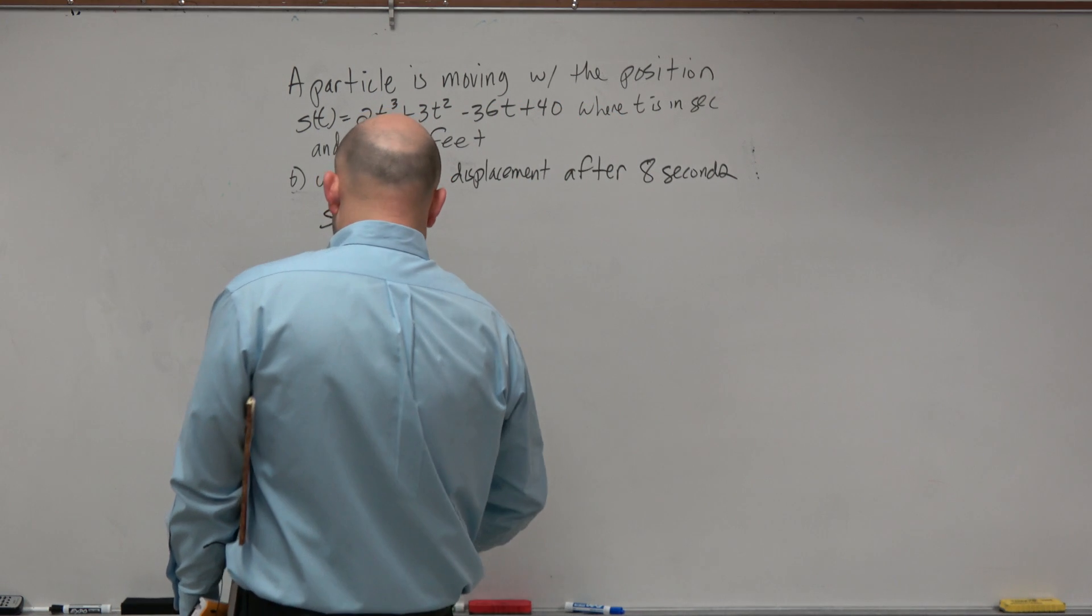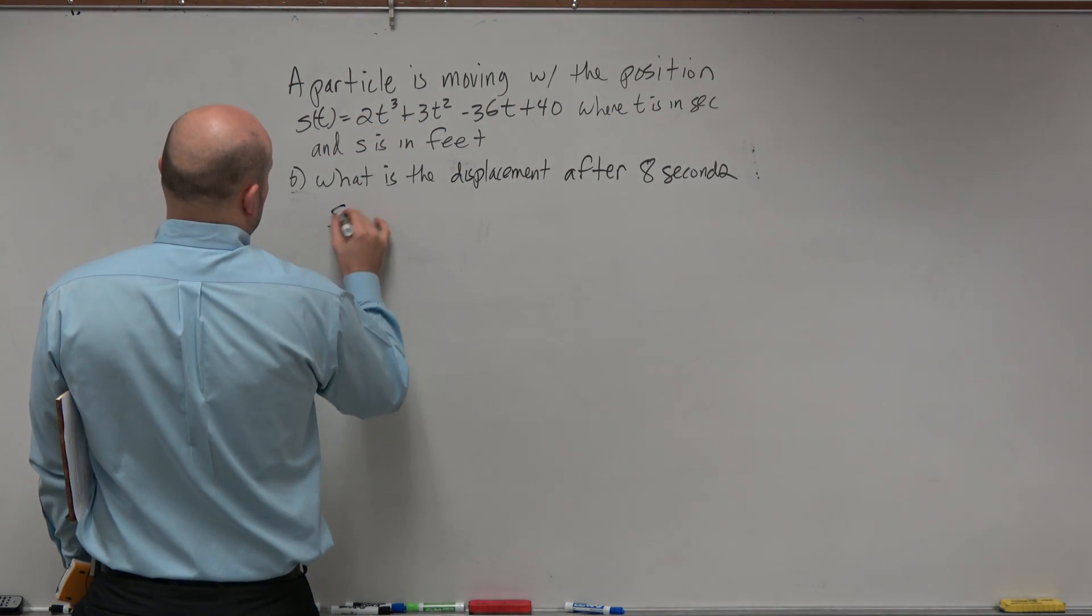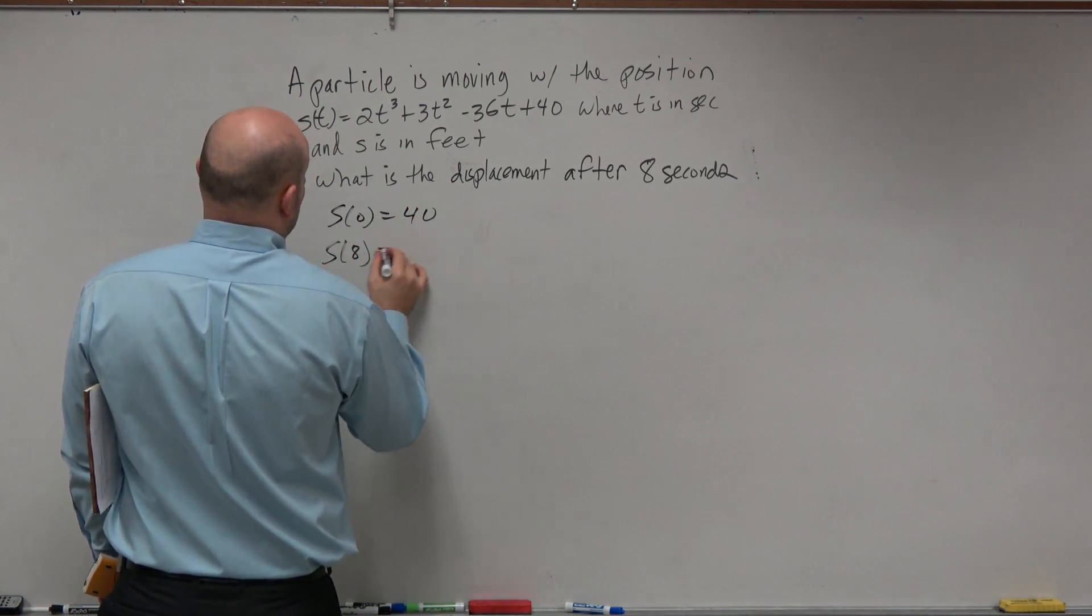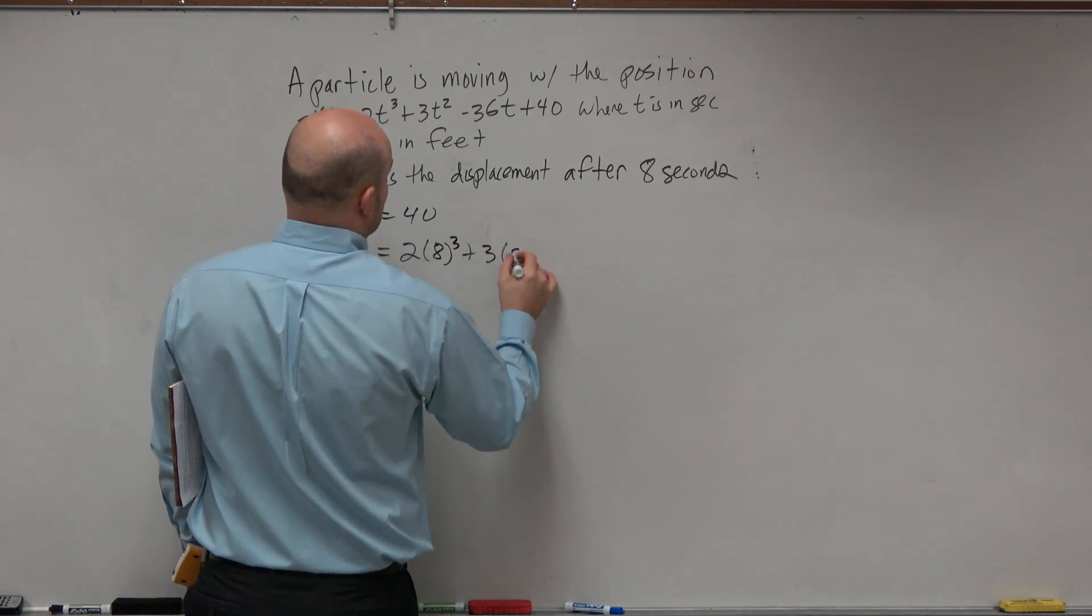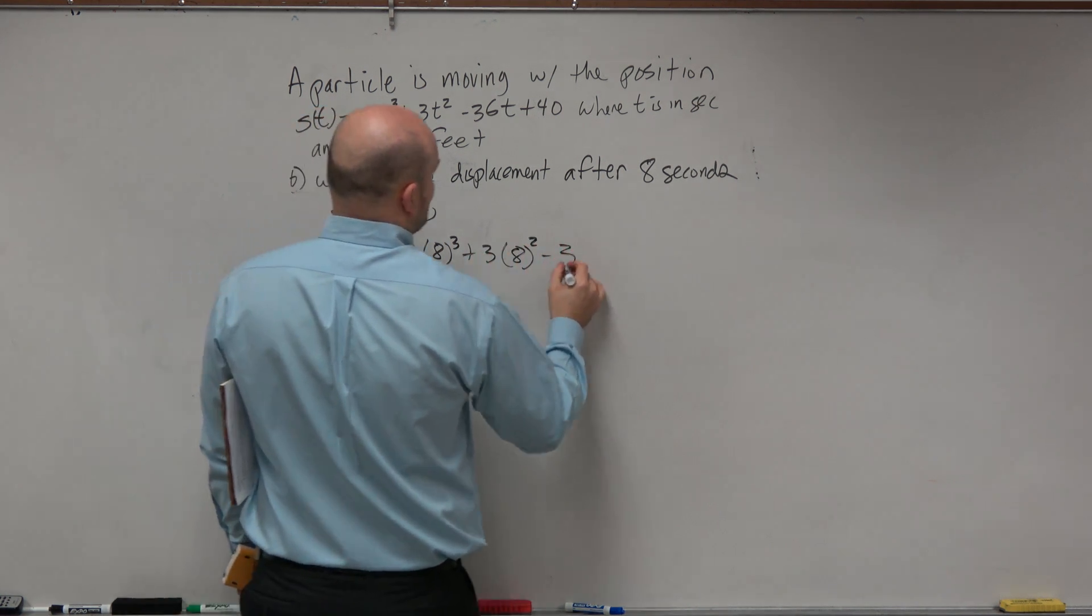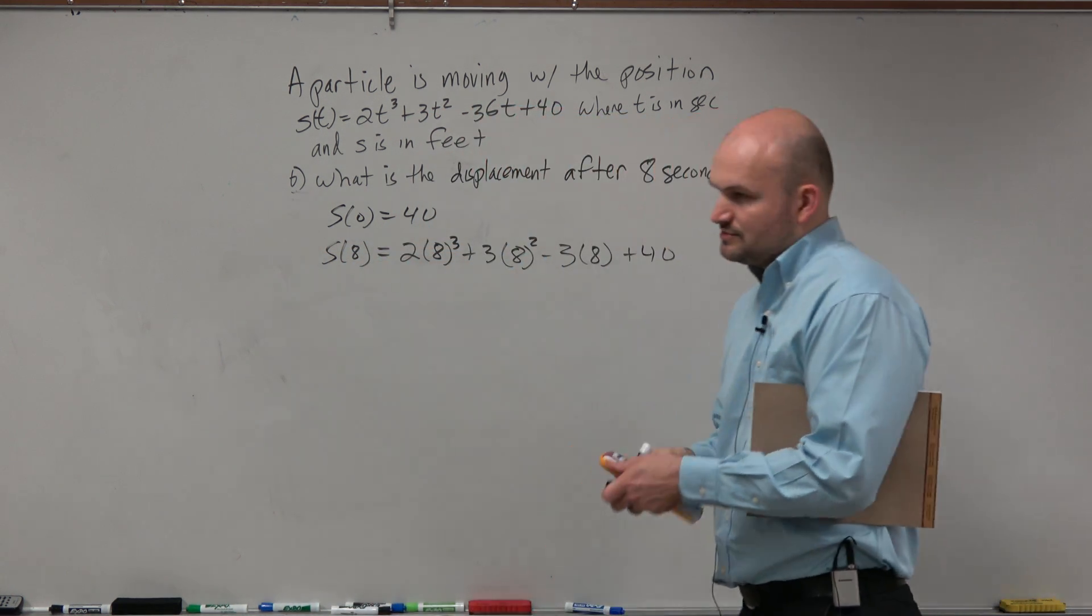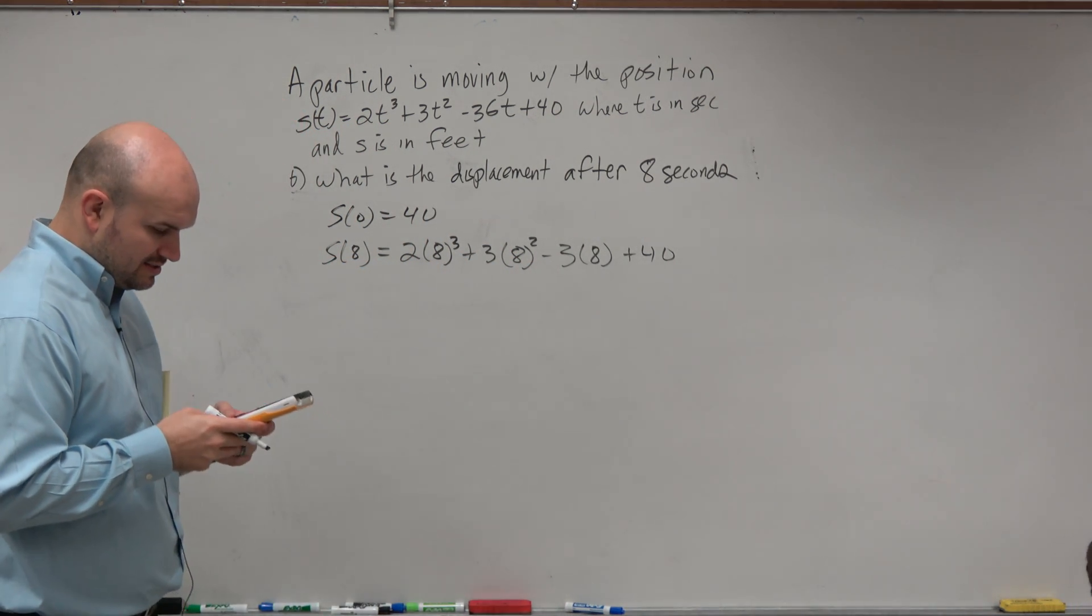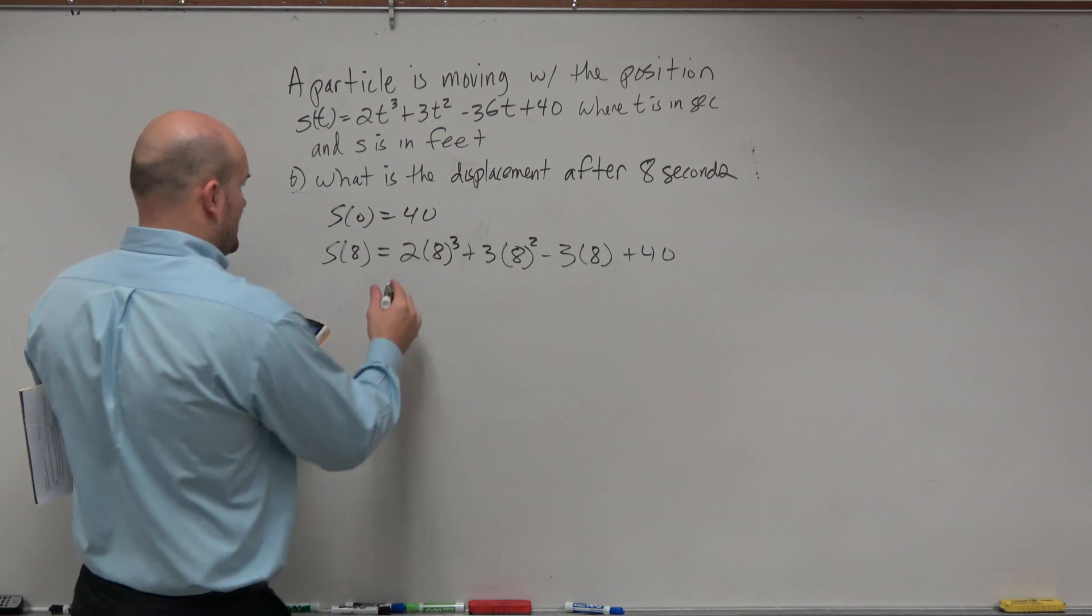To evaluate for s of 8, actually let me swap these around. s of 0 equaled 40. s of 8 equals 2 times 8 cubed plus 3 times 8 squared minus 3 times 8 plus 40. Now this one is not really as fun to do without a calculator, so let's go ahead and just work on that.